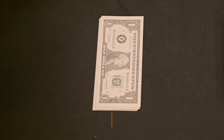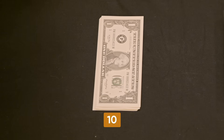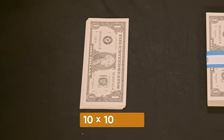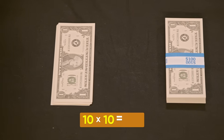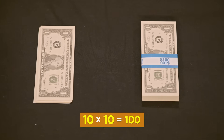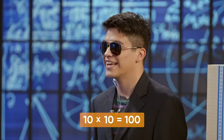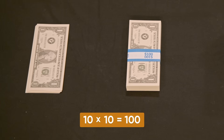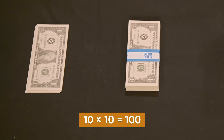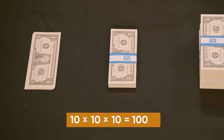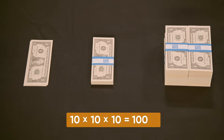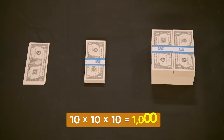Here we have ten dollars. Now if we multiply that by ten, how much would we have? Ten times ten is one hundred, so we would have one hundred dollars. If this pile has one hundred and we multiply by ten again, then the next pile will have one thousand.